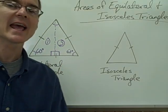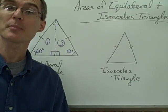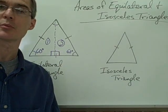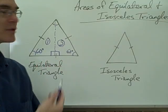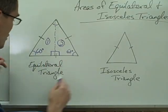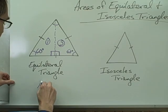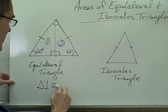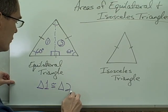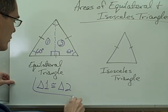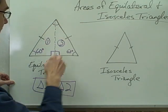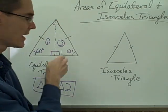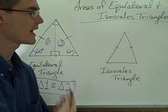That's a very handy property that I can make use of when solving certain types of area problems using equilateral triangles. Triangle number one is congruent to triangle number two when I draw this altitude on an equilateral triangle, and we're going to make use of that in just a moment.